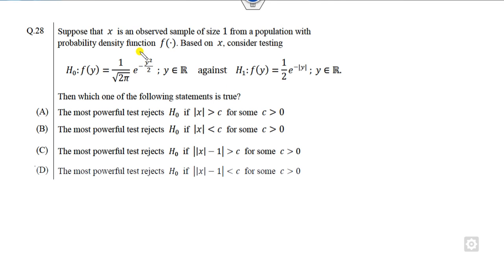So let's start with this question. If you read this question very carefully, what is given to you? X is an observed sample of size 1. If it is an observed sample of size 1, then the likelihood function L is itself what is the meaning of that - that is nothing but f(x).